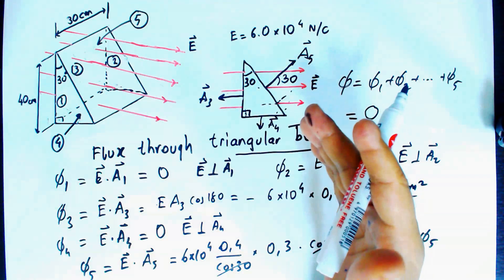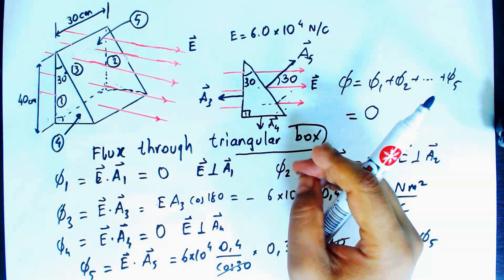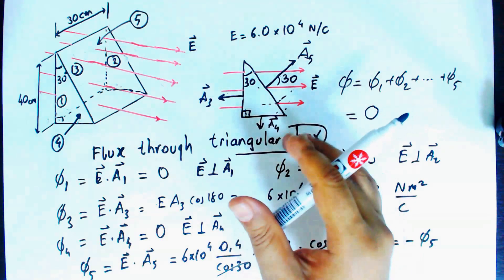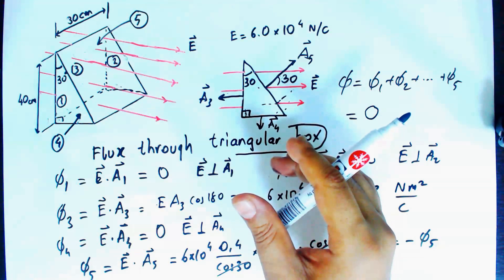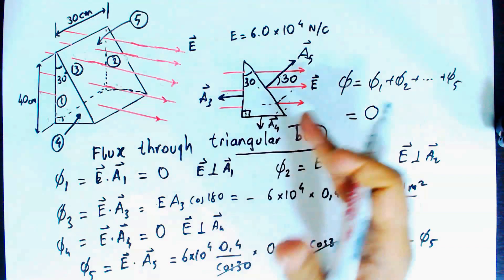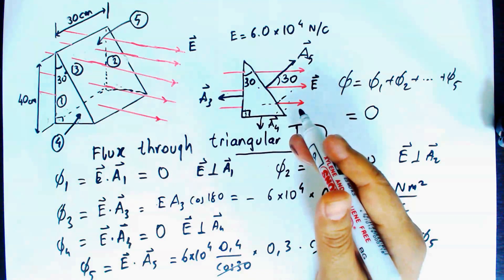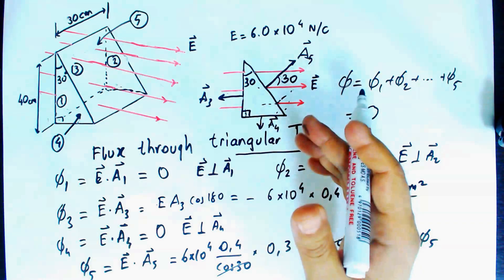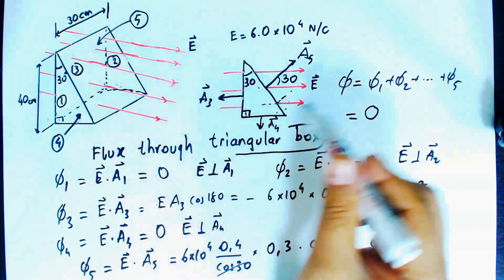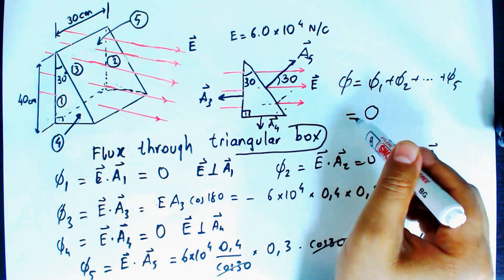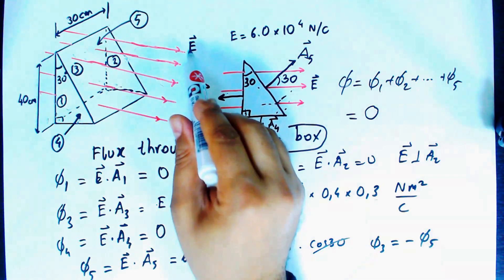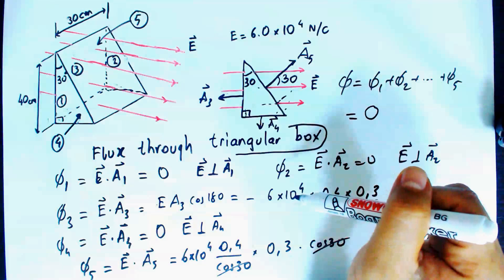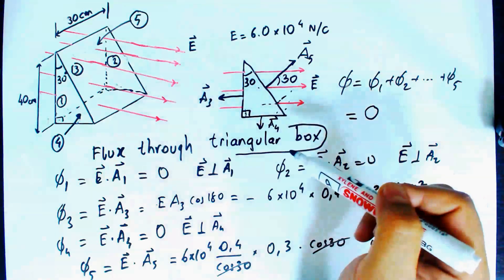This is a specific case of a general observation: whenever you have a closed box or volume that does not contain any net charge, and if that volume — which may be any irregular shape like a potato-shaped surface — is placed in a region of uniform electric field, you will always find zero total flux. The flux through a closed volume in a uniform electric field is always zero. This specific example illustrates that general result.